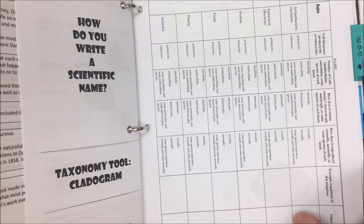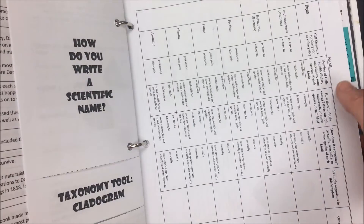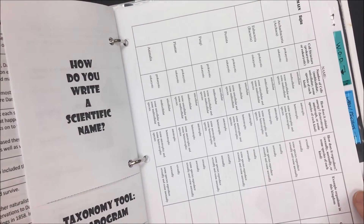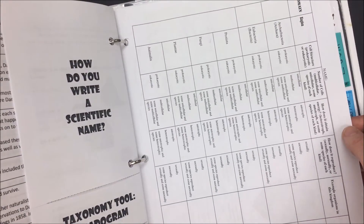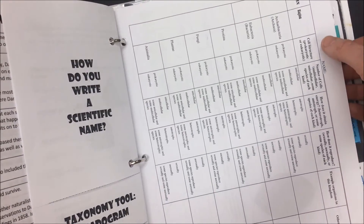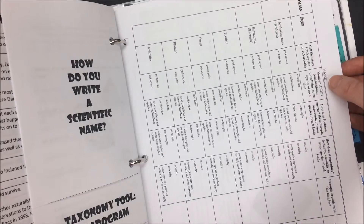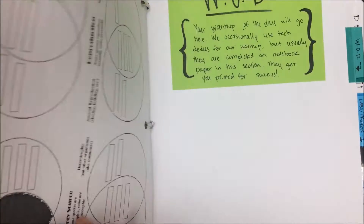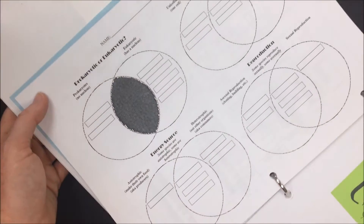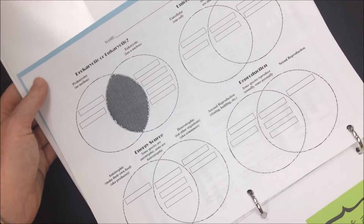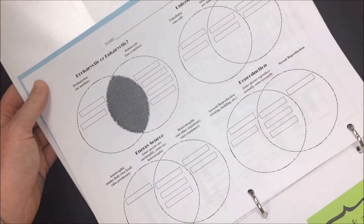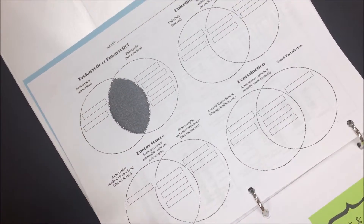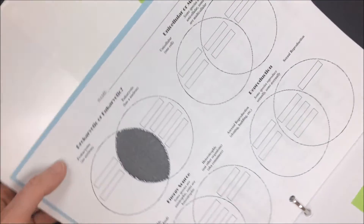The other set of notes is a chart that goes over the six kingdoms of life, three domains of life, and then the basics about their cell structure, cell number, and energy metabolism. On the back of these notes are four useful Venn diagrams. It might be easier for you to remember the information this way.